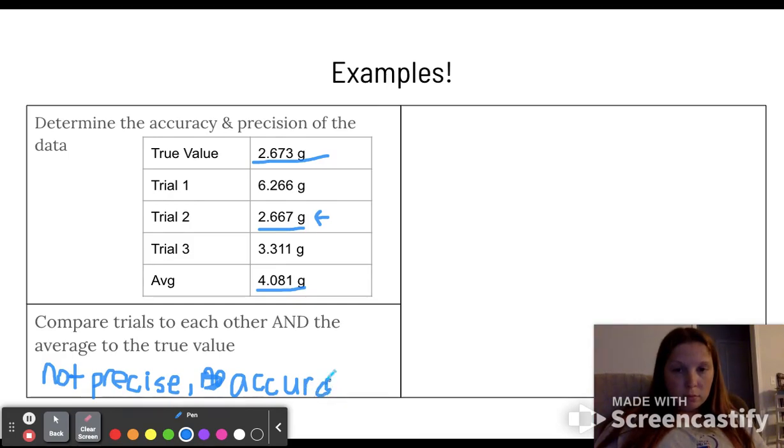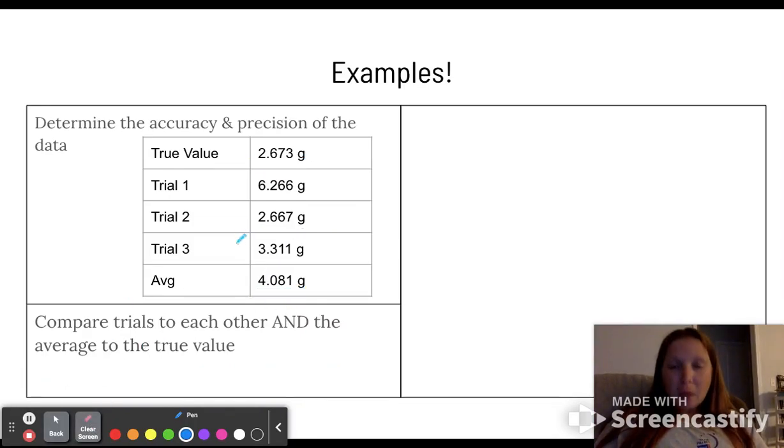I'm going to clear this off and start this example over. I'm getting distracted by my writing. For precision, you compare all the trials to each other. And then average to the true value, which is how they do want you to do that. So that would be accuracy.